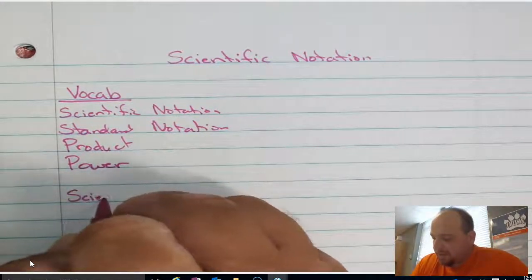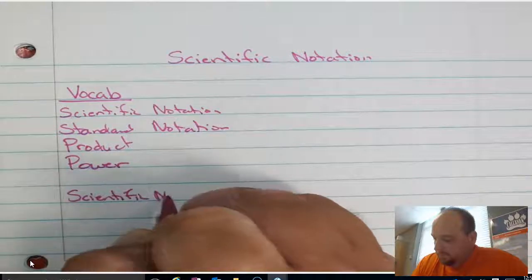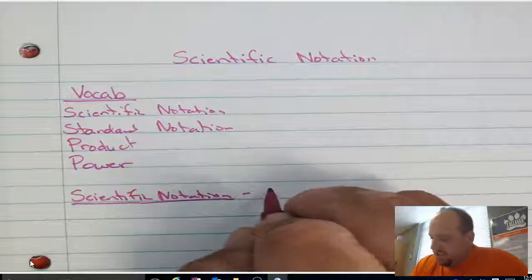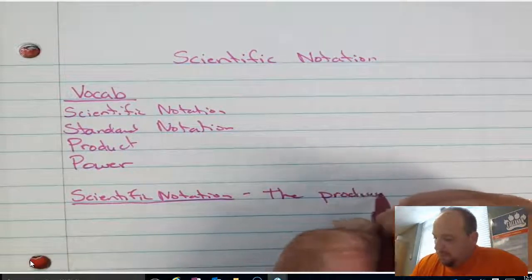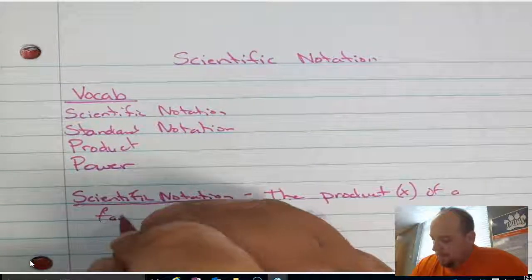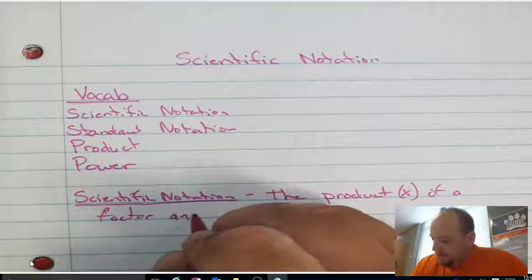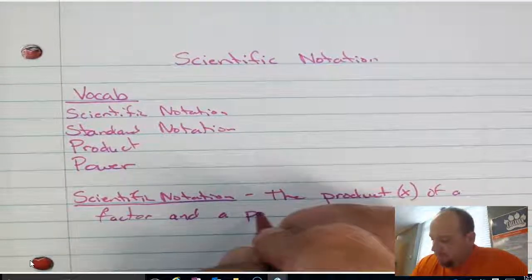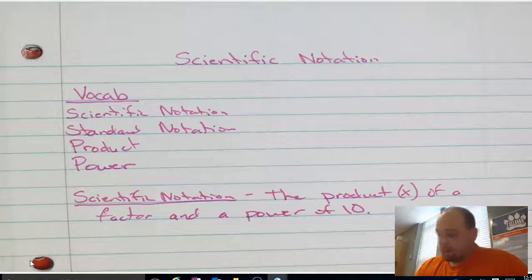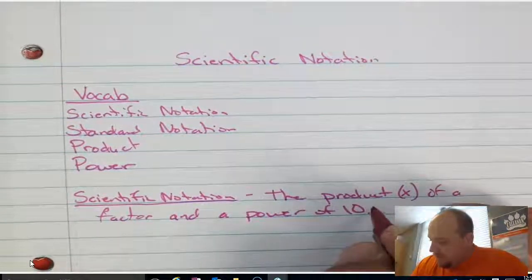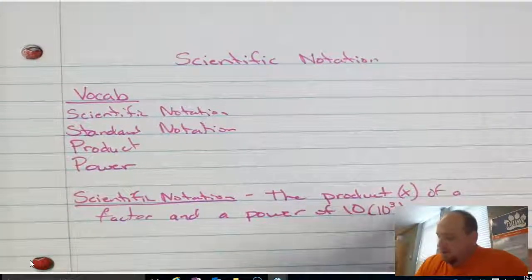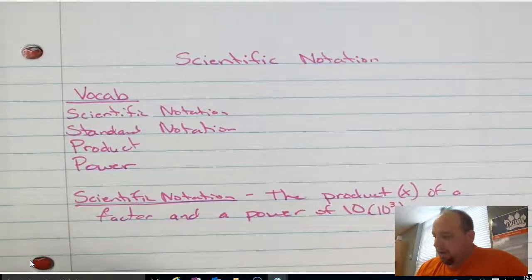So the first thing I'm going to do is define what scientific notation is. Scientific notation is the product — product meaning multiplication — of a factor and a power of 10. A power of 10 just means 10 with an exponent, like 10 to the third power. So scientific notation is the product of a factor and a power of 10.